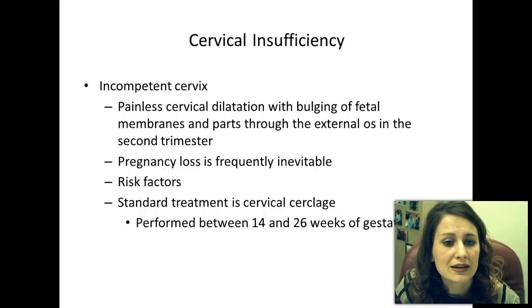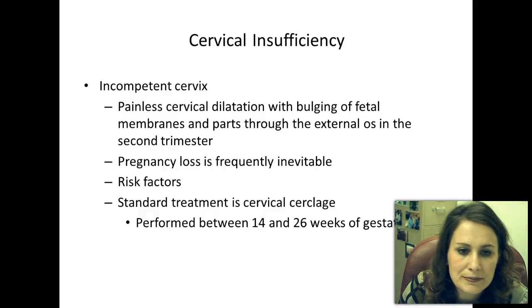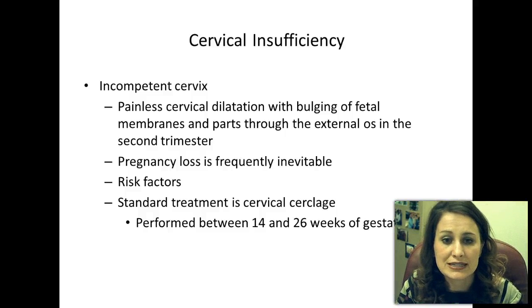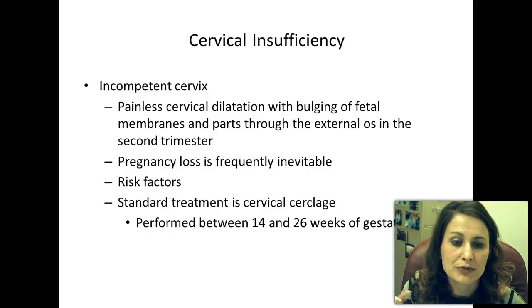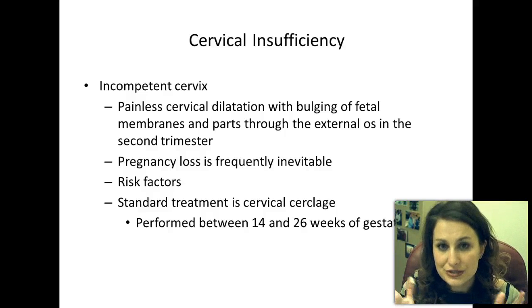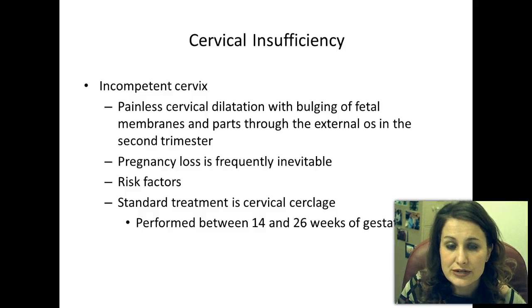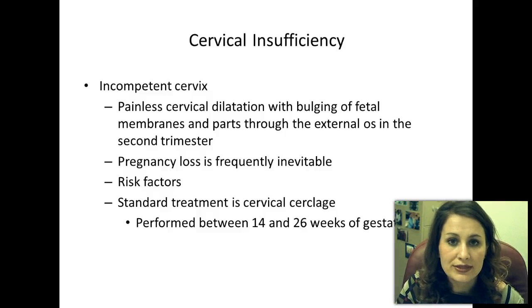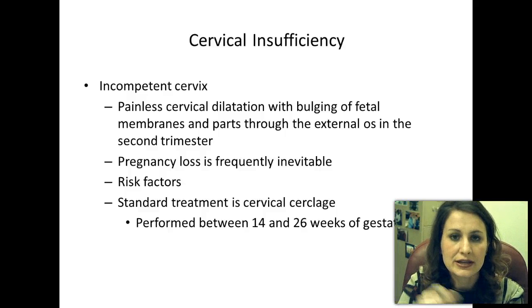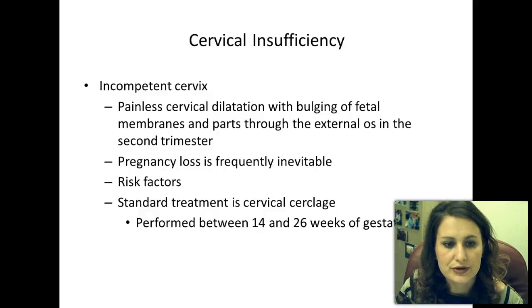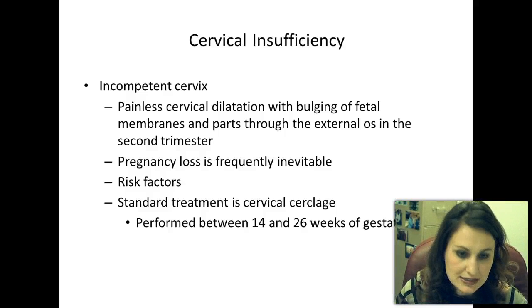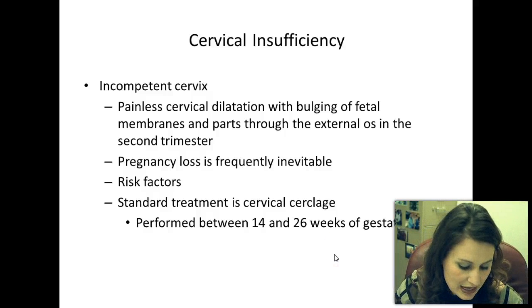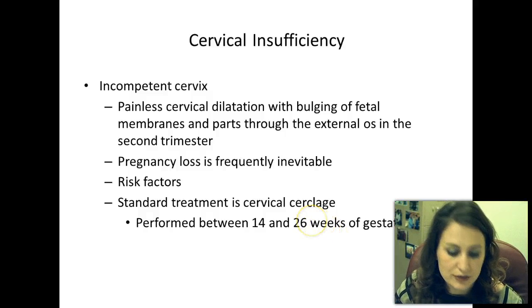Cervical insufficiency refers to an incompetent cervix—a painless cervical dilation with bulging of fetal membranes and parts through the external os in the second trimester. The baby is trying to come out too soon, and pregnancy loss is frequently inevitable. If caught in time, a cerclage (a small suture) is placed to keep the cervix from dilating. This is often performed between 14 and 26 weeks of gestation and is removed at term or when the woman starts going into labor.